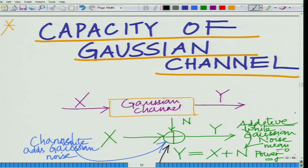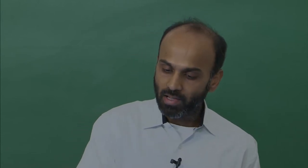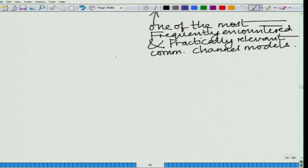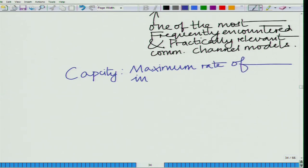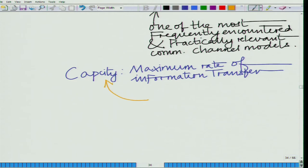What do we mean by the capacity of this channel? By capacity we mean the fundamental rate — the maximum rate — at which information can be transmitted across this channel with an arbitrarily low probability of error. The capacity has fundamental relevance in communication systems because it gives us the maximum rate of information transfer at an arbitrarily low probability of error.